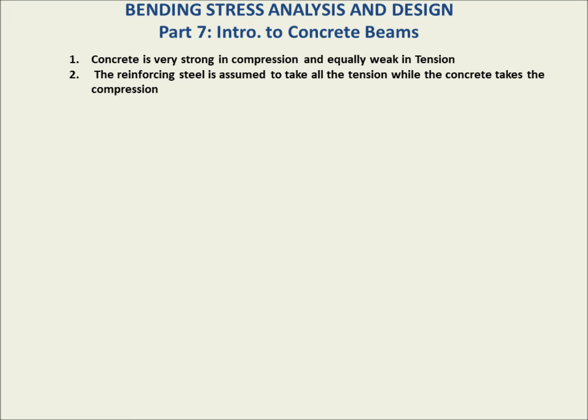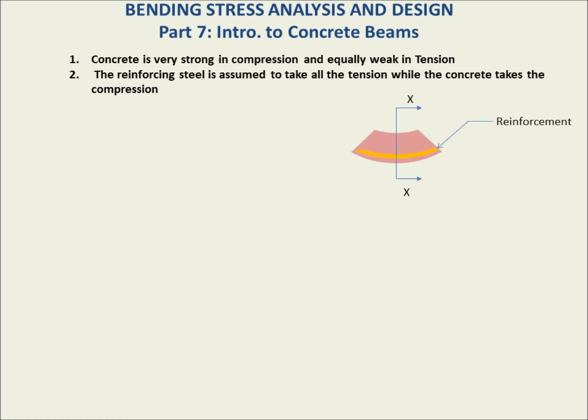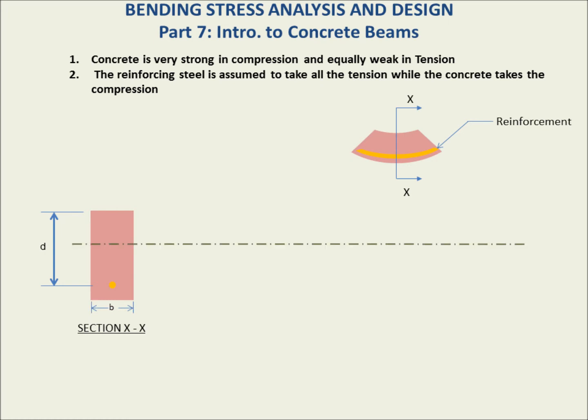Let's consider our typical smiley-face bent beam with reinforcement shown in the tension region. Note that during service loading of this beam, the concrete in the tension region is all cracked, and that region is basically held together by the tension in the reinforcement. The cross-section has a certain depth from the top to the reinforcement and a width. The green line here represents the neutral axis.